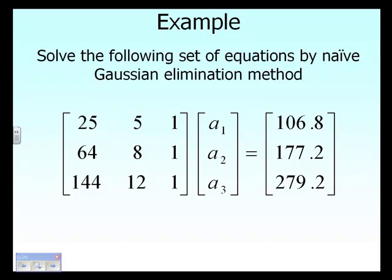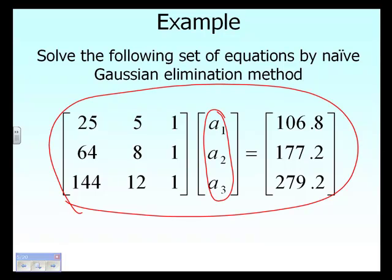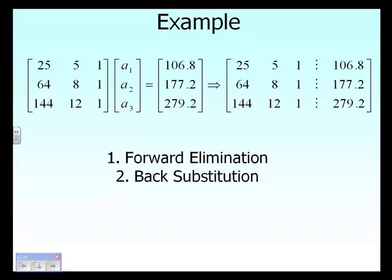In this segment, we're going to take an example and solve it using the Naive Gauss Elimination Method. We're given three equations and three unknowns: a sub 1, a sub 2, and a sub 3. We want to find out what these three unknowns are. The first step is to take the three equations and three unknowns, which are given in matrix form.